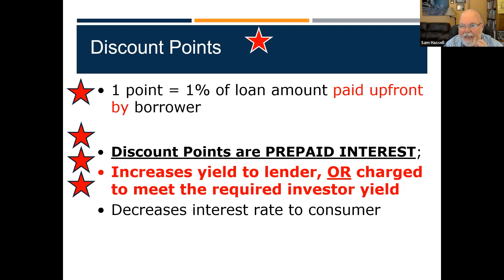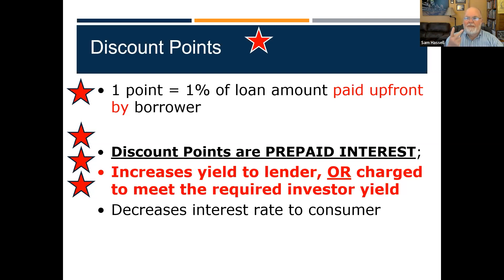But what it does is prepaid interest. This lowers your interest rate by an eighth of a point for every point that you pay. Or on the other side, it raises the profit for the lender by one-eighth of a point. So maybe they're saying we'll give you a 4% interest rate, but you've got to pay two points — meaning you pay 2% of the loan, you still get your 4% interest rate, but that 2% gives the lender a profit of two-eighths, or a quarter, because you prepaid 2% of the interest.